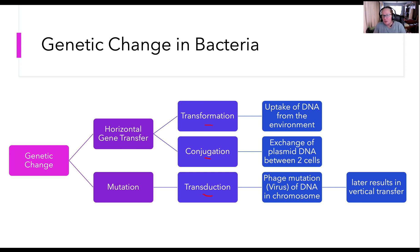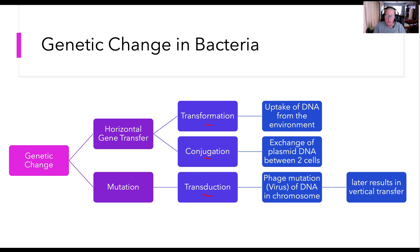Conjugation brings us back to unit one, where we talked about structures in bacteria and the pili. Pili are specialized fimbriae structures used for attachment, but they are also hollow tube-like structures. Bacteria will make a copy of their genetic information and move it across the pili to a recipient cell. That recipient bacteria will take in that copy of a plasmid — or at least a piece of it — and incorporate it into its own genome. Genetic exchange has occurred, but there's no third cell as a result, so it's not sexual reproduction — it's horizontal gene transfer.